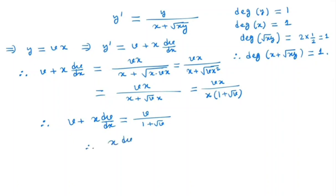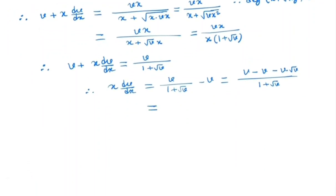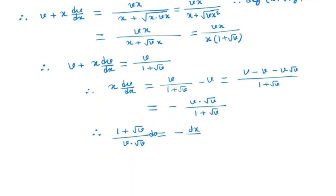So x dv/dx equals v divided by (1 plus root v) minus v, which gives v minus v minus v times root v, all over (1 plus root v). Simplifying, we get negative v times root v divided by (1 plus root v). Separating variables, we have (1 plus root v) divided by (v times root v) dv equals negative dx divided by x.